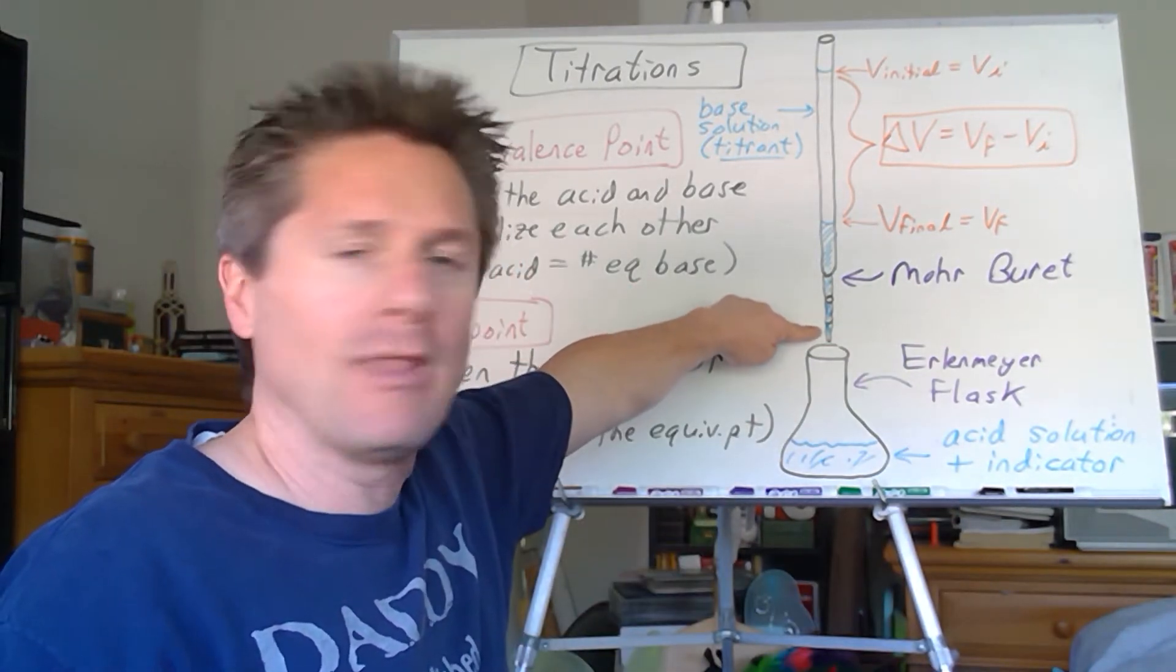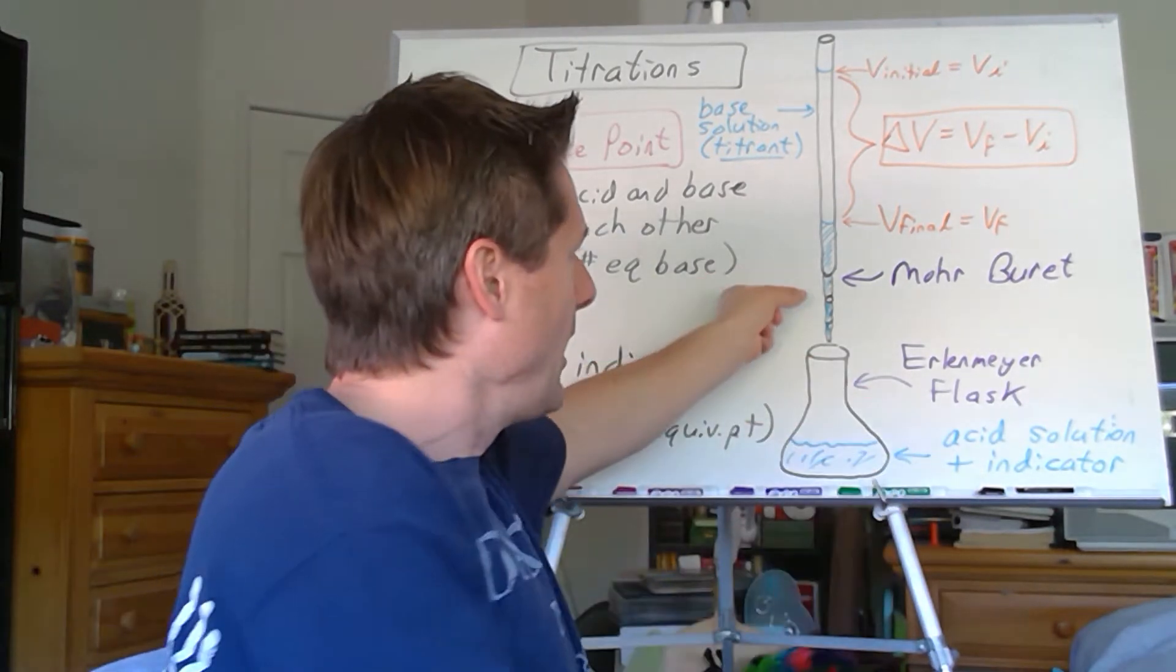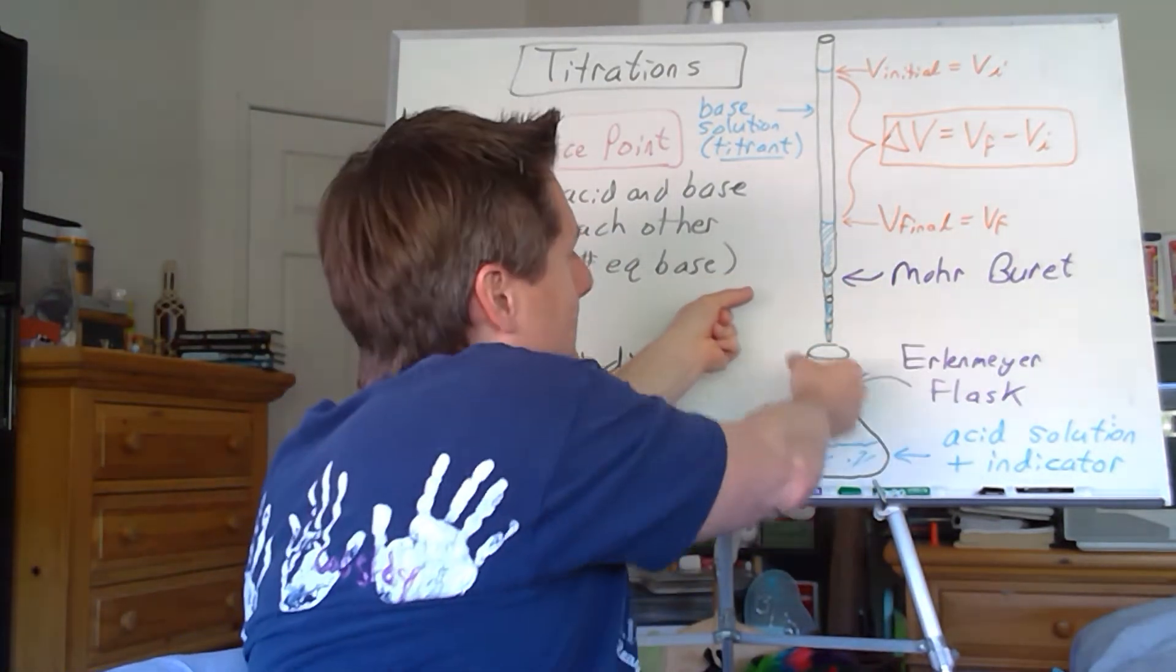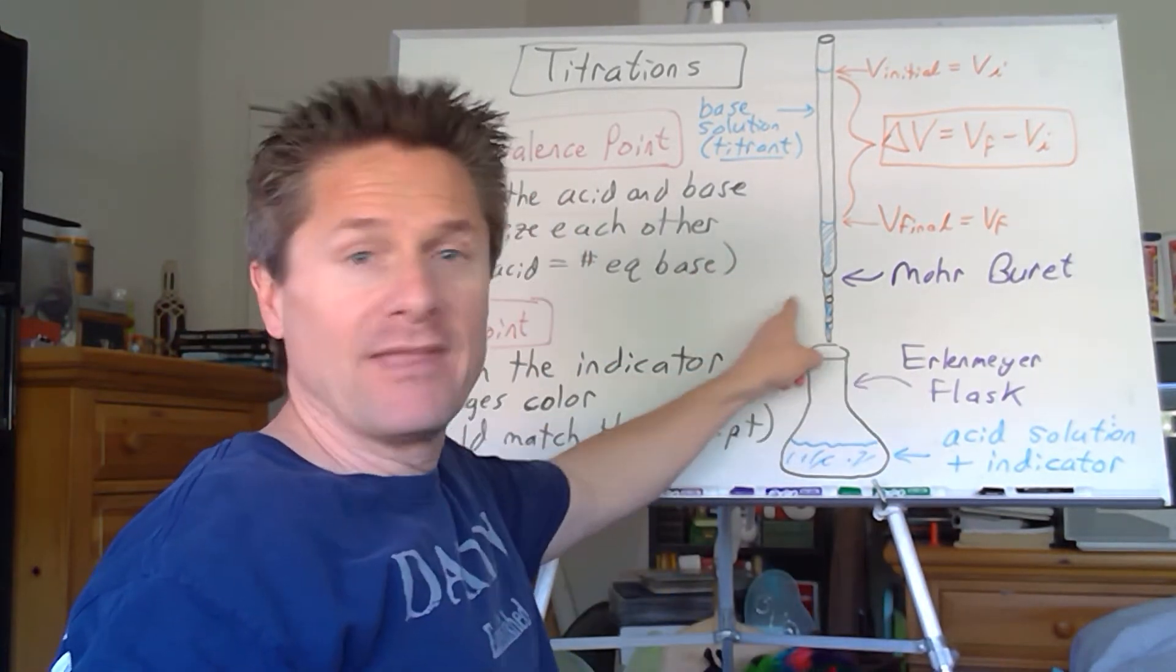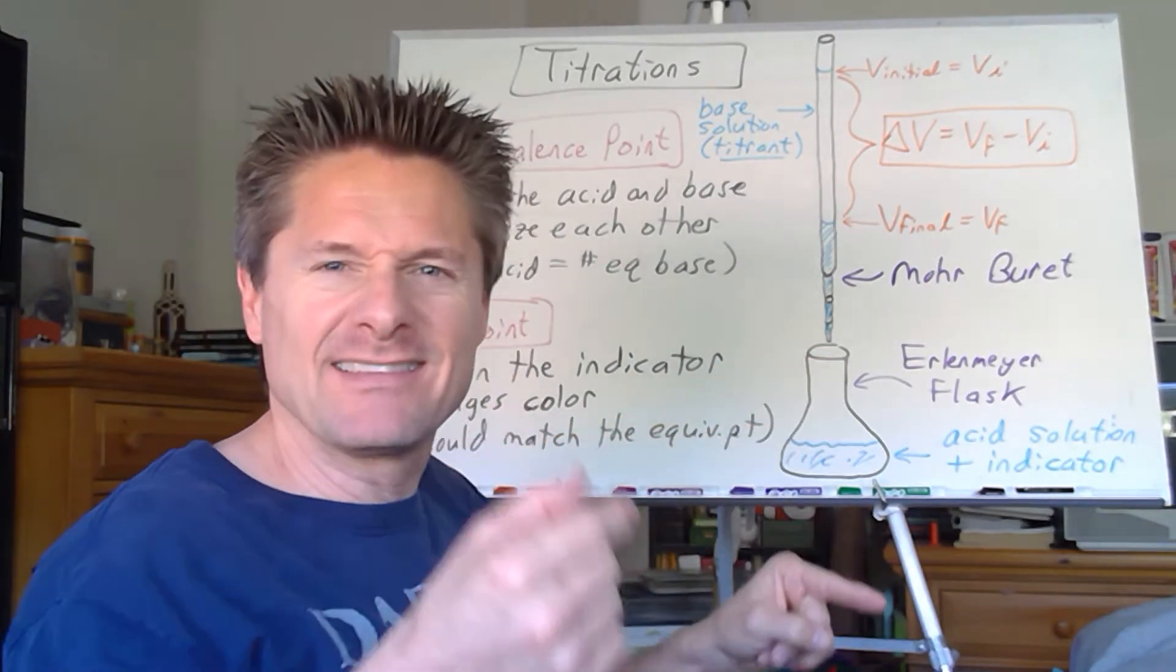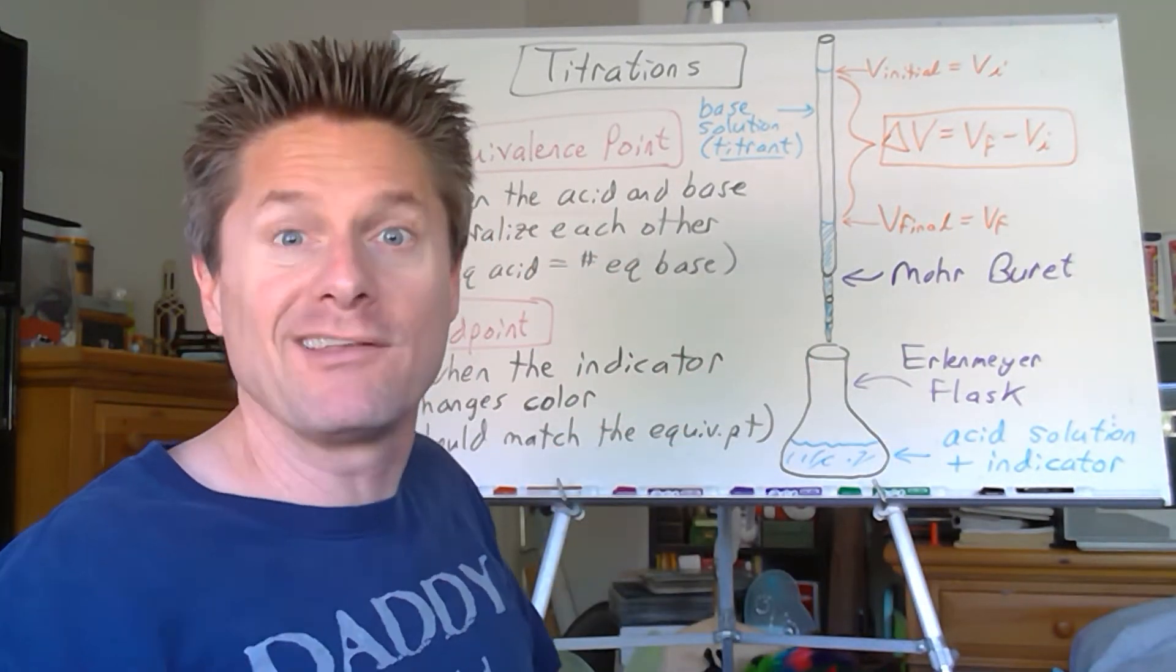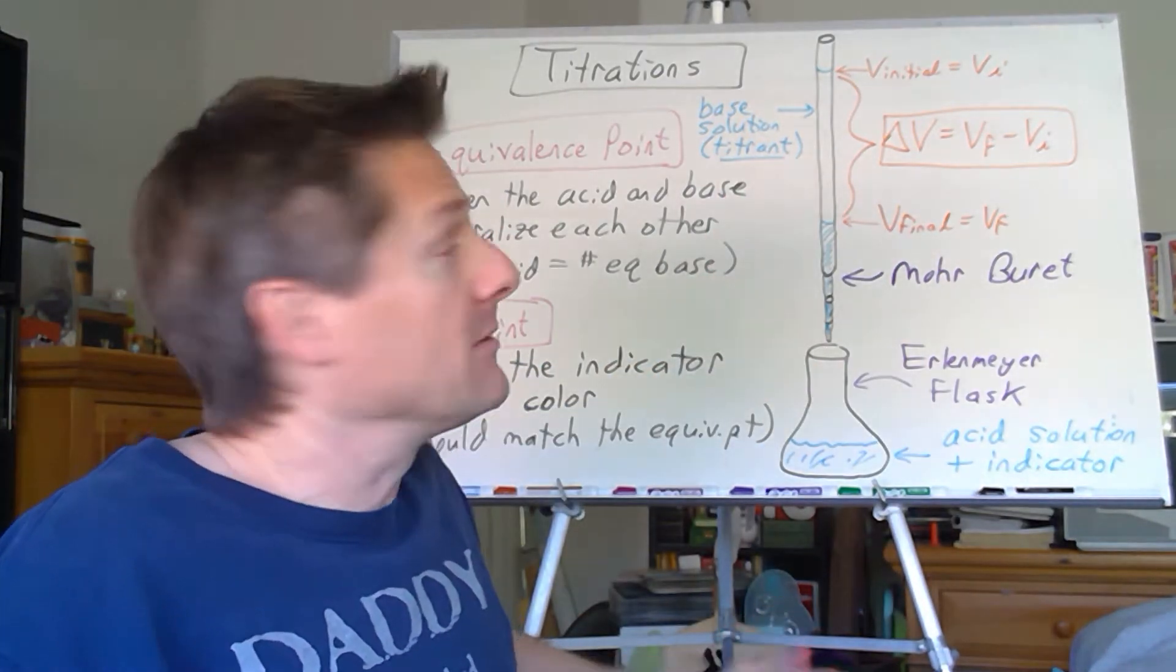And we call that the titrant, what we're adding from the burette into the Erlenmeyer flask. We want to use that Erlenmeyer flask because it has that smaller entrance hole to reduce splashing. So I like to dispense the liquid with my left hand and lift the Erlenmeyer flask up a little bit and swirl it while I'm doing it. I don't want to lose any drops on the outside. You're toast if that happens. But I don't want that clinking on the inside either. So I'll swirl it around.